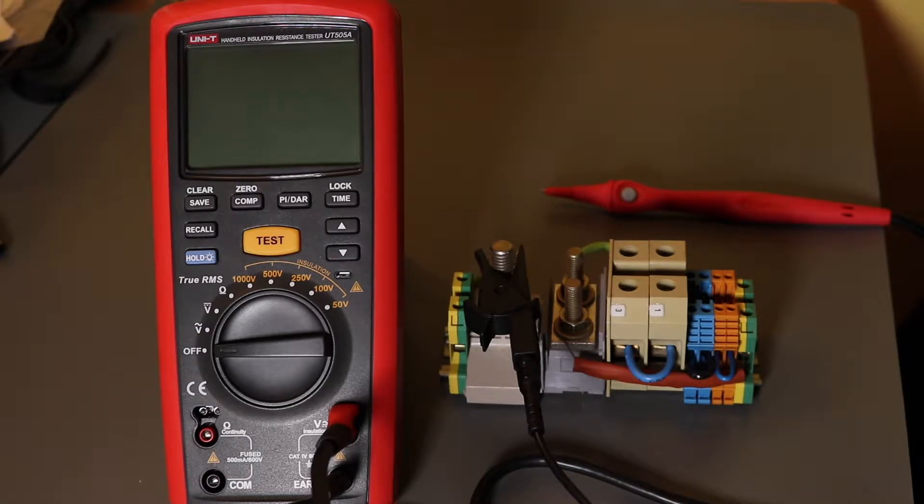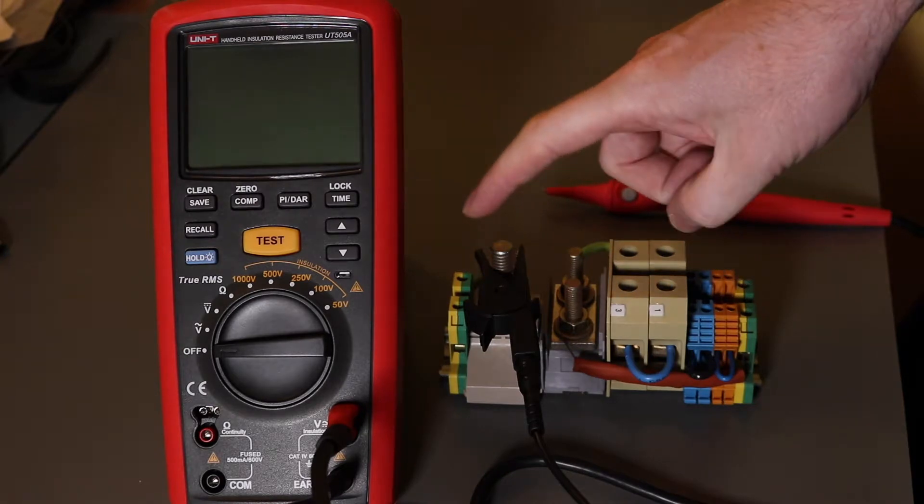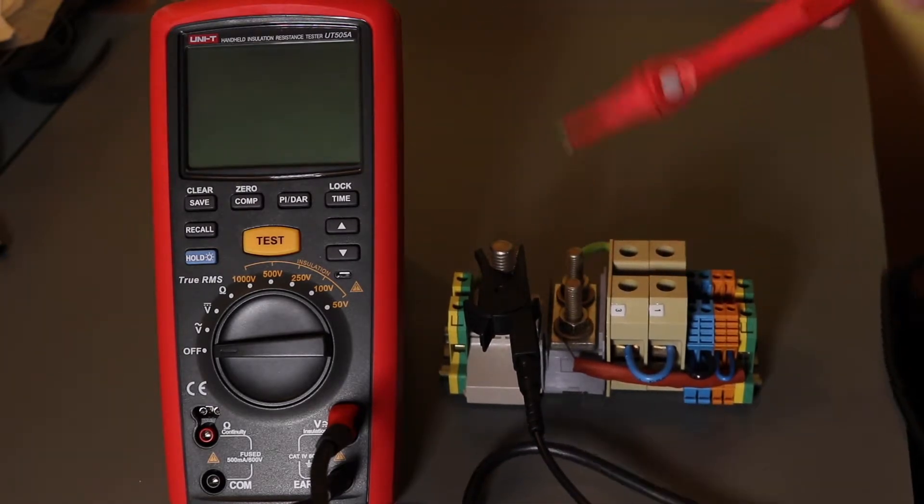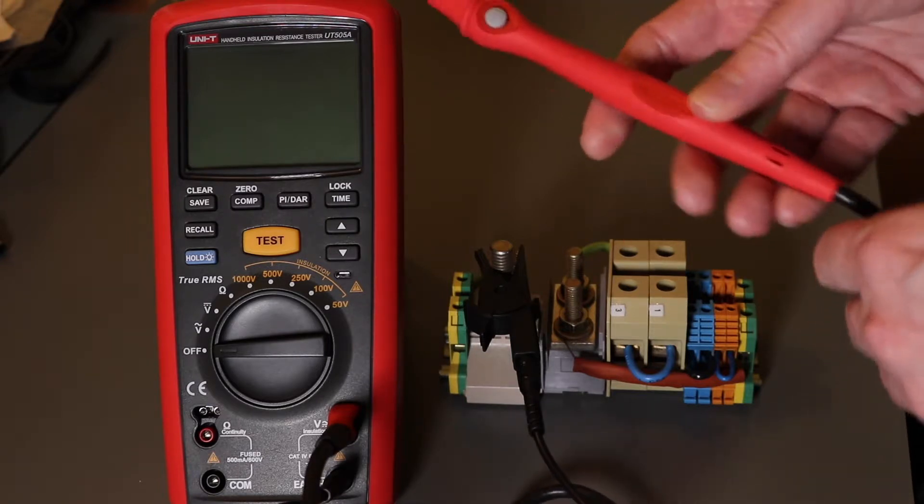So this is some of the elements of the operation of the UniT-UT505A insulation tester. I've got one of the leads hooked up to one terminal and there's about a 2MΩ resistor across these terminals to go through it, which I'm actually using.